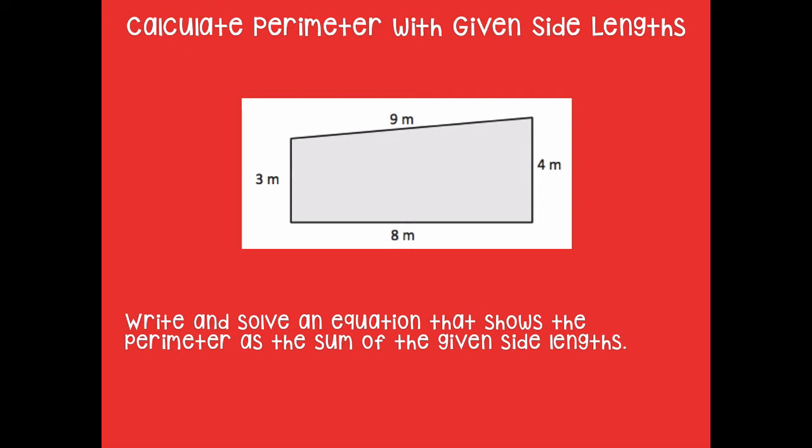If you need more time, make sure you click pause. Otherwise, here we go. So remember you are going to find the sum of the side lengths to find the perimeter. So it would be 3 plus 9 plus 4 plus 8. If yours are in a different order than mine but you still have those same numbers, that's absolutely fine. Remember that's part of the commutative property where you can flip-flop those numbers around and it does not matter.